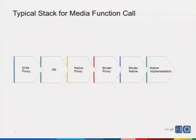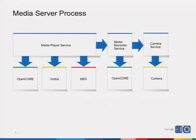This is a top-level diagram of what the media server process looks like. We have the media player service which can instantiate a number of different players. On the left-hand side you'll see OpenCore, Vorbis, and MIDI — three different media player types. The Vorbis player basically just plays OGG Vorbis files, which is a psychoacoustic codec that's open source. We use this for a lot of our internal sounds because it's very lightweight and efficient — for ringtones and application sounds.